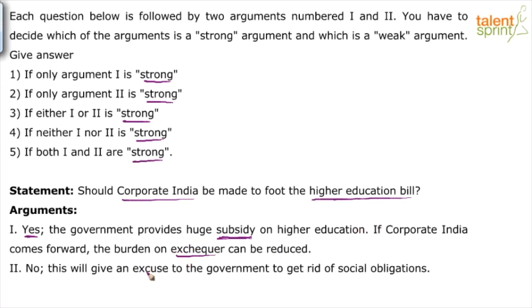For example, if corporate India says they will spend 20,000 per candidate out of that remaining 50,000, the burden on government comes down. This is not saying the government will stop funding — the argument only says the government's burden will reduce. It's not that corporate India should be the only spender; they can also contribute through CSR — Corporate Social Responsibility — so the exchequer saves money that can be used for other things.